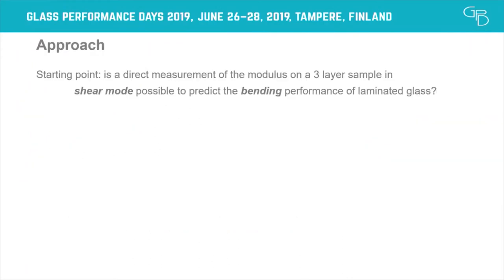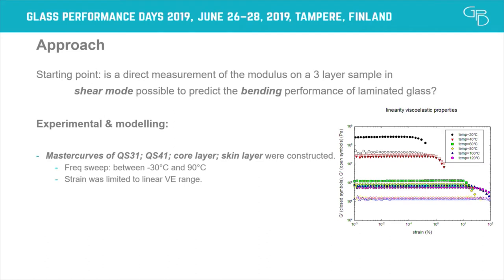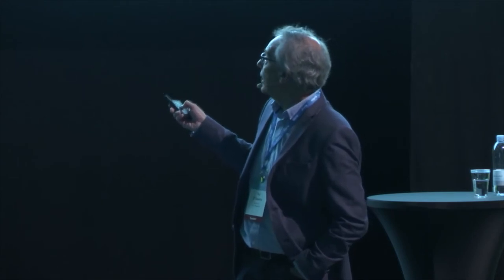The starting point is that we are going to measure the three-layer system in shear mode, not tensile mode. We do this because we are interested in the stiffness in bending deformation, where the interlayer is deformed in shear. We measured master curves of the core layer, skin layer separately, and also the three-layer system together. We used two different multi-layer systems identical in composition but differing in relative thickness of the core layer. Frequency sweeps were conducted from minus 30 to 90 degrees Celsius.